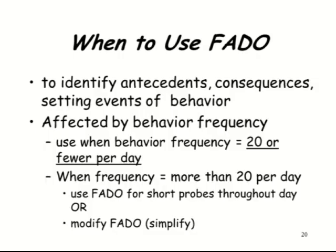When do you use the FADO? Certainly after you have a hypothesis statement and want to narrow down antecedents and consequences. It works better for behaviors that are higher frequency — if something happens several times per day, you'll get information more quickly. You can use it for short probes if a behavior happens 10 to 15 times within an hour, focusing on certain periods. If a behavior only happens a few times a day, you may want to collect data throughout the day over several days. You really need at least 10 occurrences before you can make sense of the data.